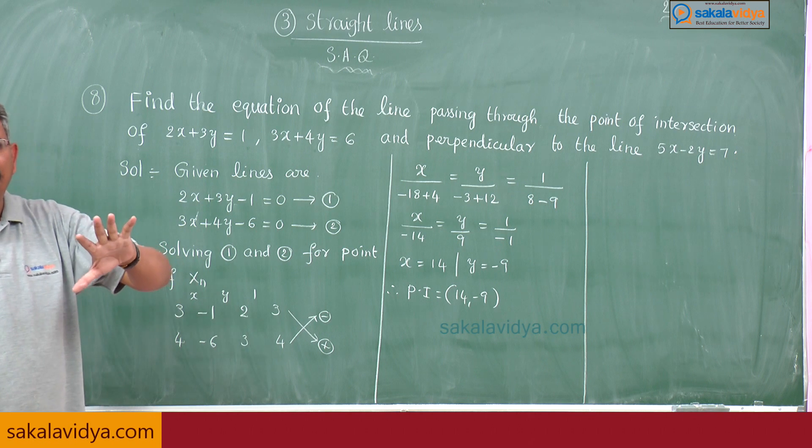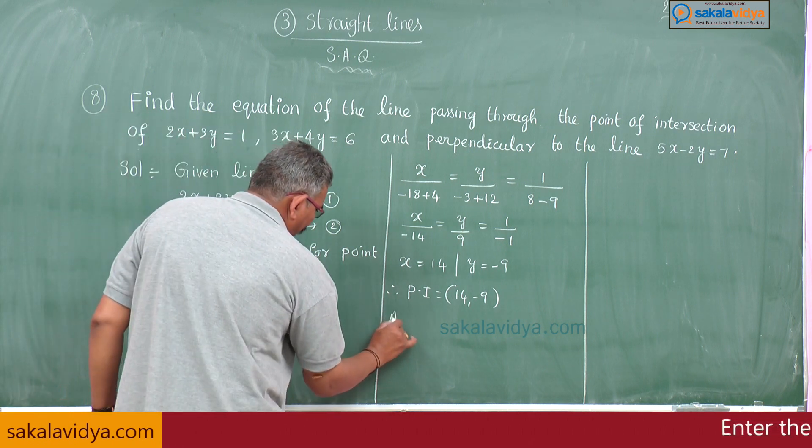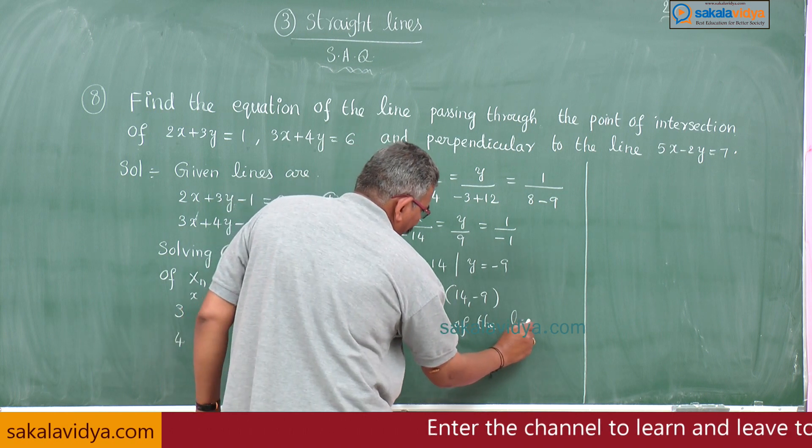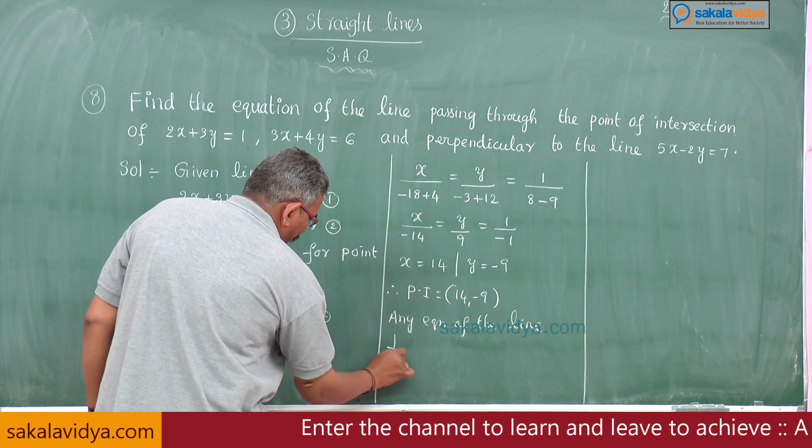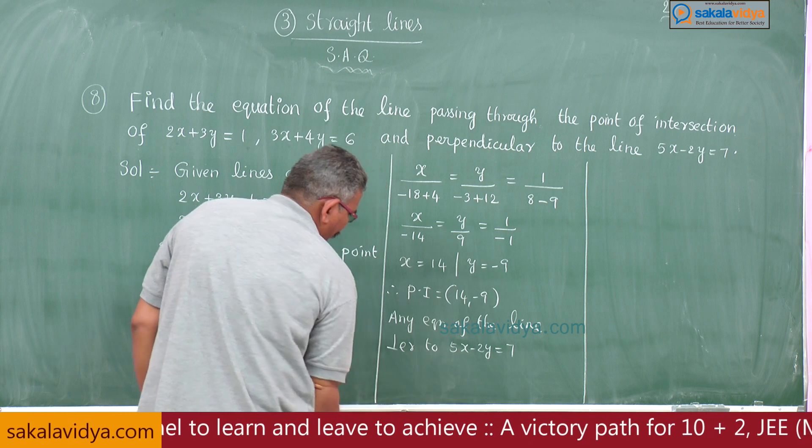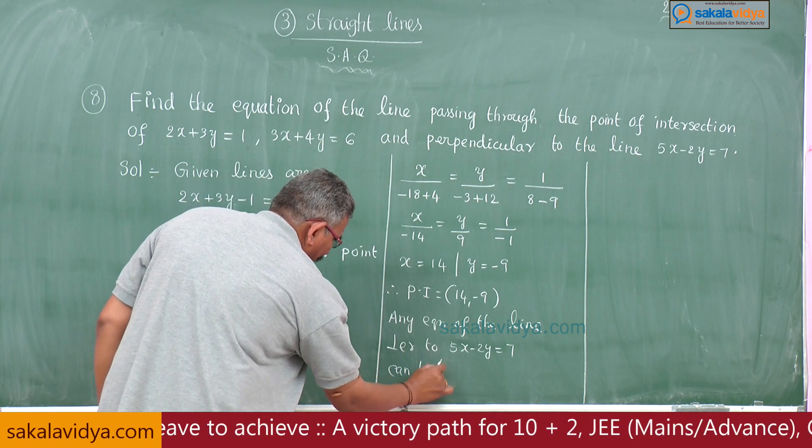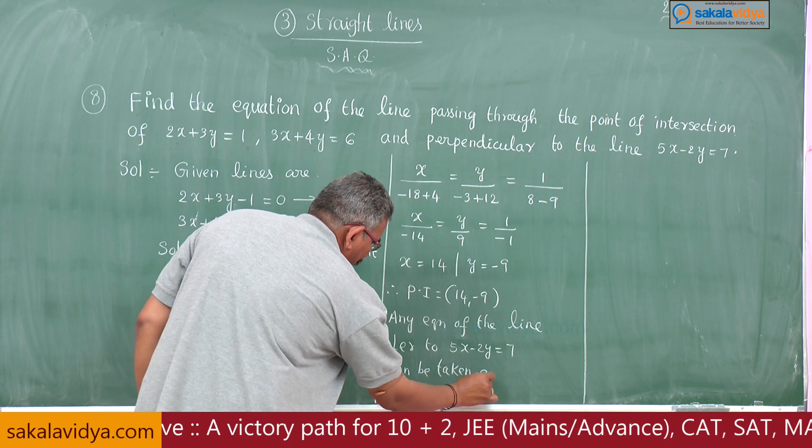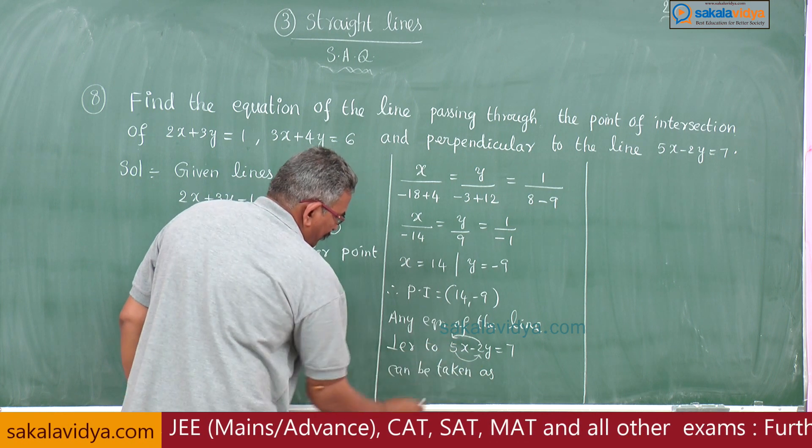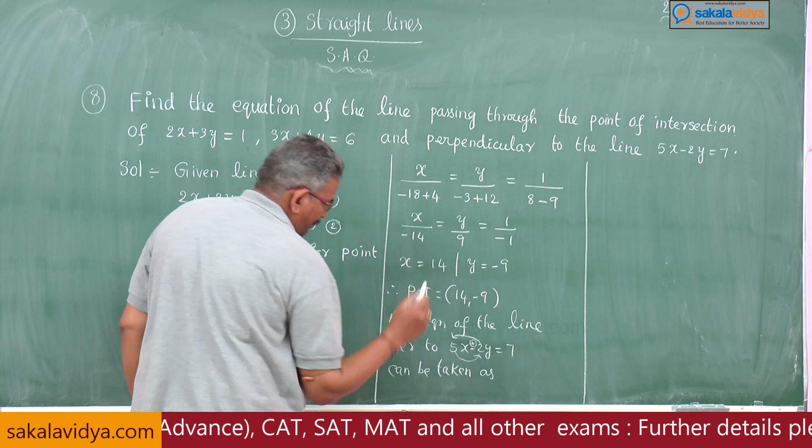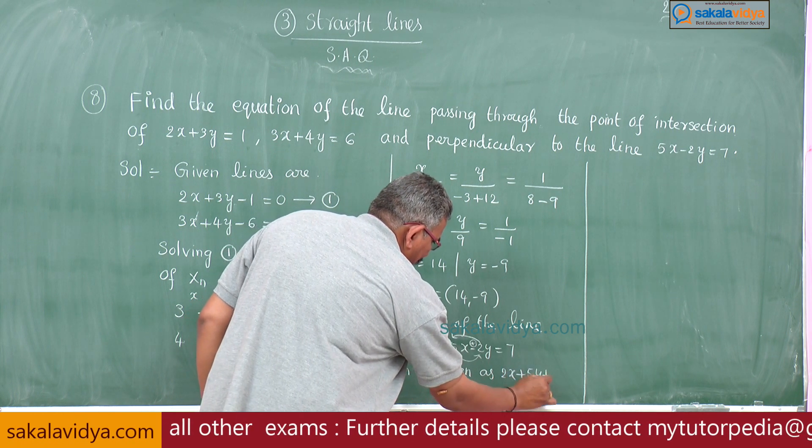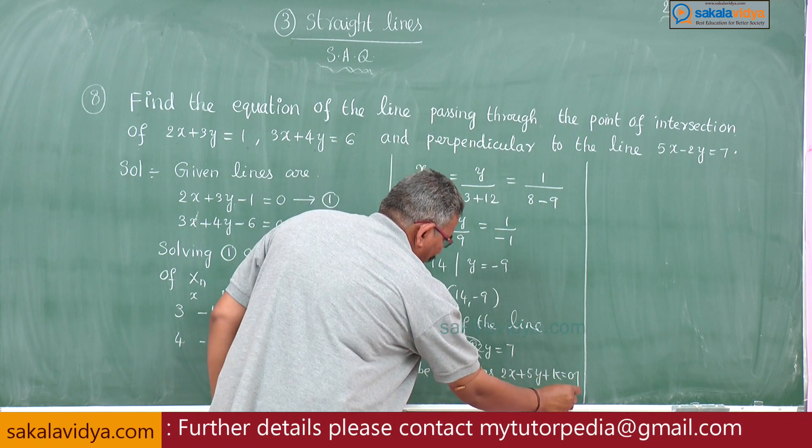Now we have to frame another question in this problem. Any equation of the line perpendicular to 5x-2y=7 can be taken as: interchange these two, change sign of this one, this becomes plus. That means 2x+5y+k=0. This is equation 3.